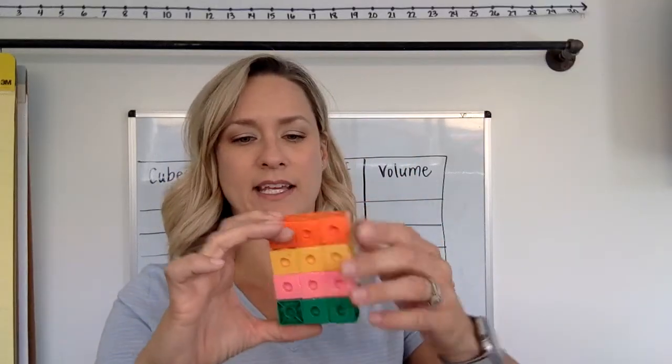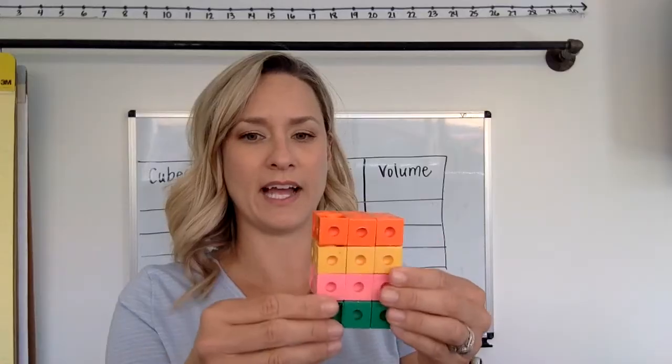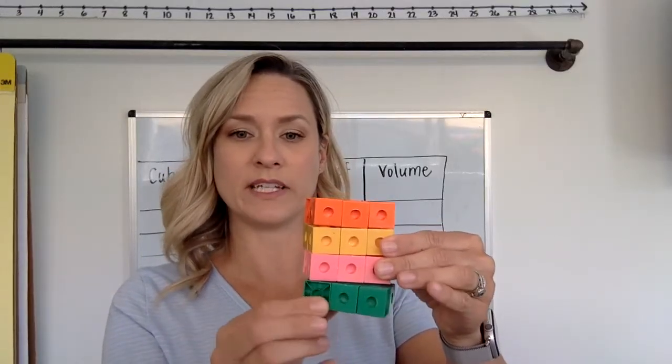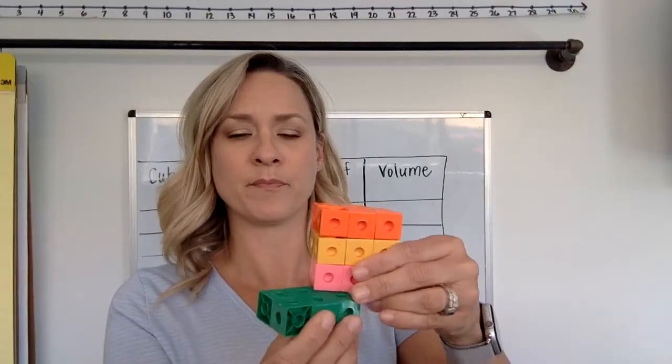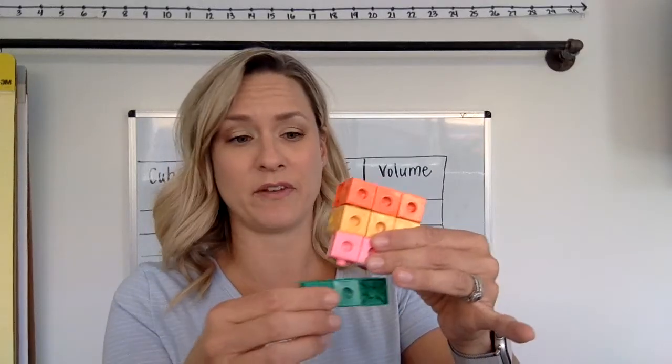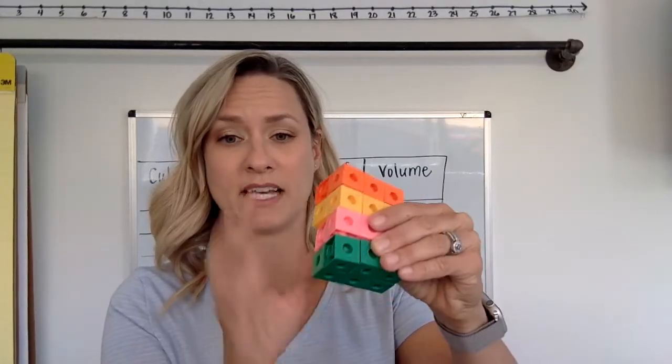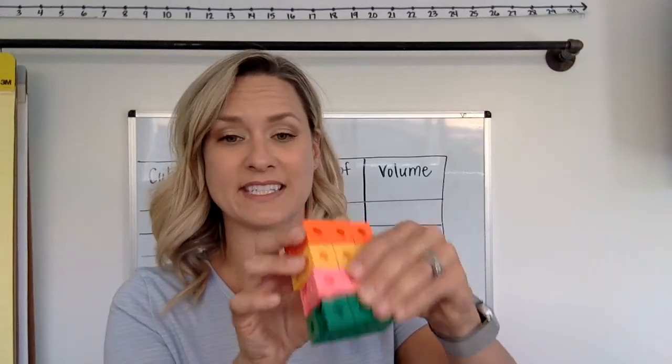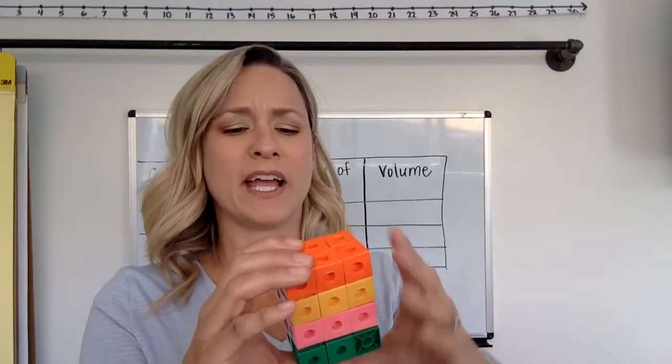Looking at this, you can see I have different layers. My green layer - I'm just going to take it off. Here's my green layer. You can see that it's made of 1, 2, 3 by 2. If you were talking about the bottom of it, that's the area, that's the base. So it's a 3 by 2.